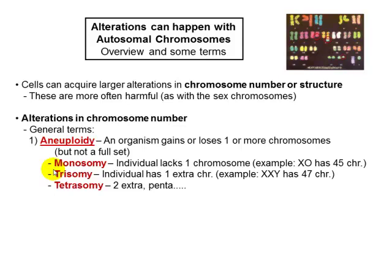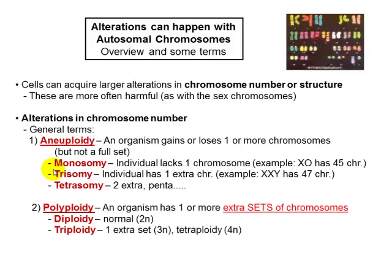You can also have a tetrasomy, where there will be four chromosomes of the same type, and a pentasomy with five chromosomes of the same type. Remember that the phenotypes of having extra chromosomes — in general, the most common phenotype is developmental disorder or mental retardation.